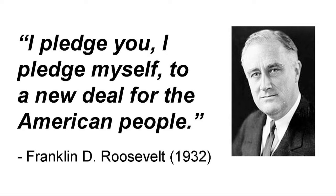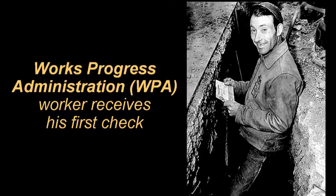The New Deal. "I pledge you, I pledge myself to a new deal for the American people." — Franklin D. Roosevelt, 1932. Hank Ottinger was working as a printing press operator in a small town in Wisconsin when the Great Depression began. He lost his job in 1931 and was unemployed for the next two years. In 1933, however, President Roosevelt began creating work programs. Through one of these programs, the Civil Works Administration, Ottinger went back to work in 1933.